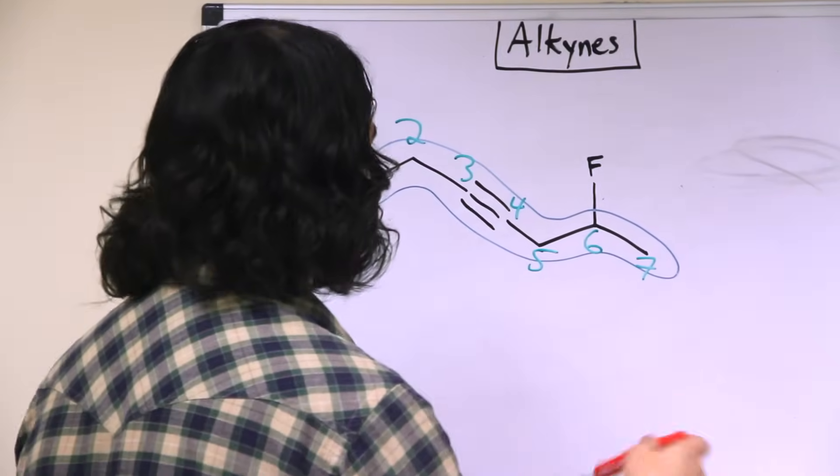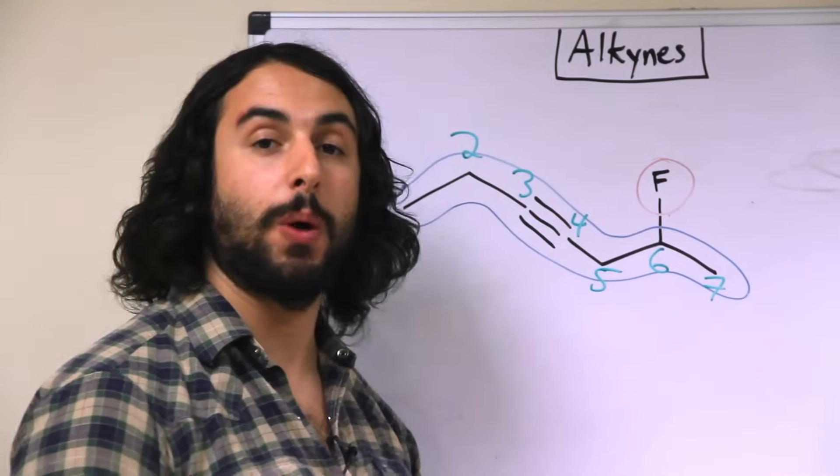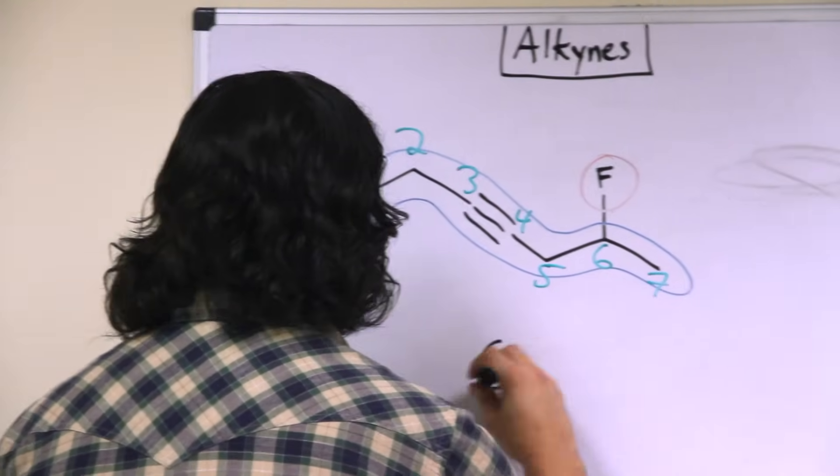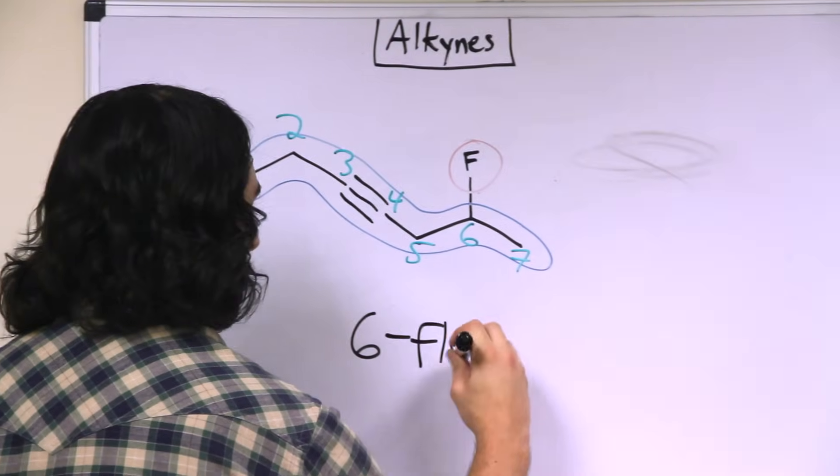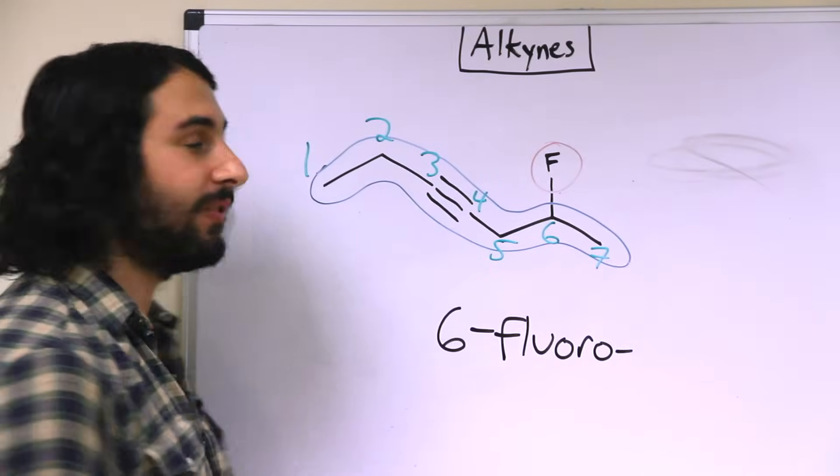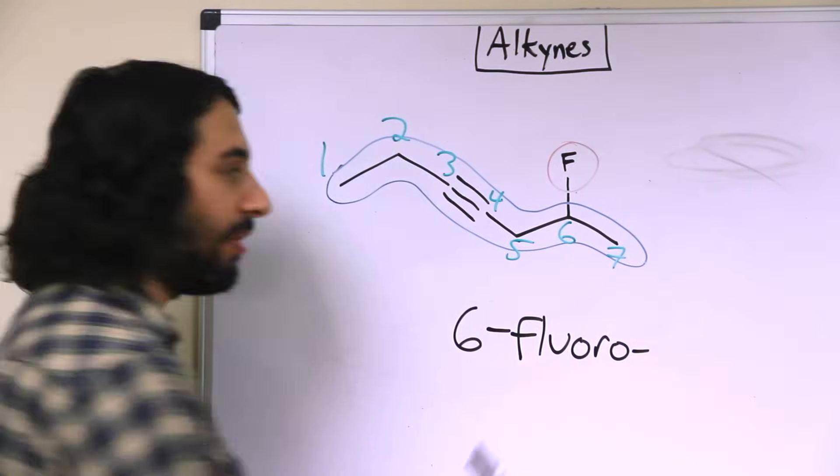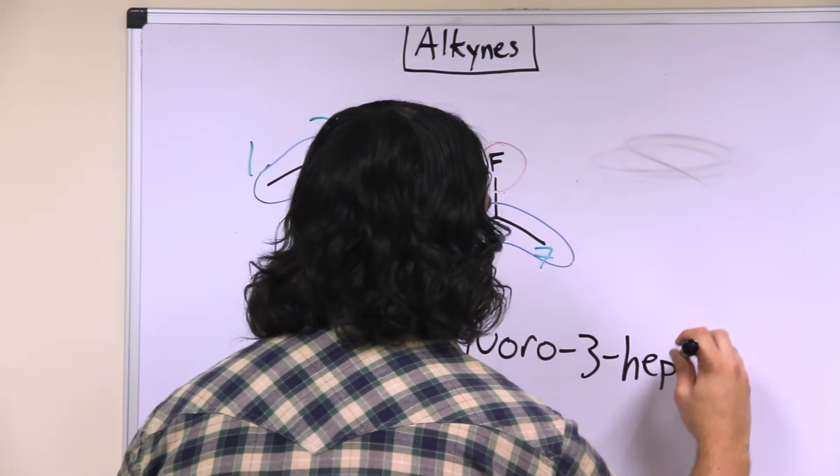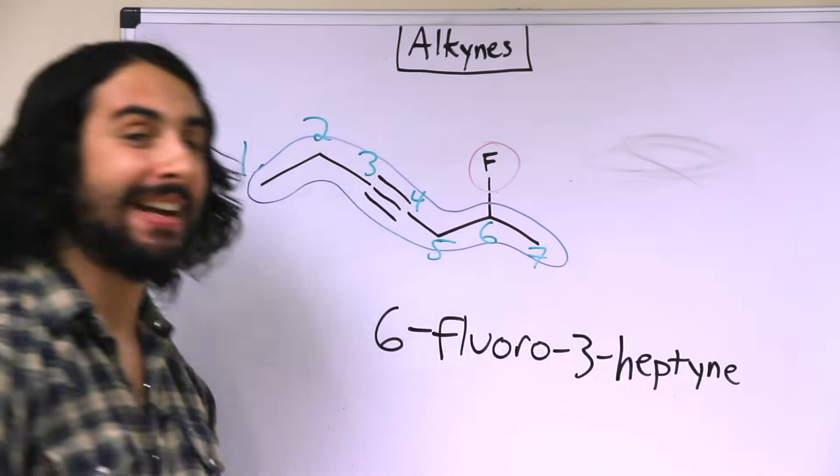Okay, so now we just have to identify the substituent. We have a fluoro group on carbon-2, or sorry, carbon-6. So 6-fluoro, and then we must state the location of the triple bond. It begins on carbon-3. So we have a 6-fluoro-3-heptyne.